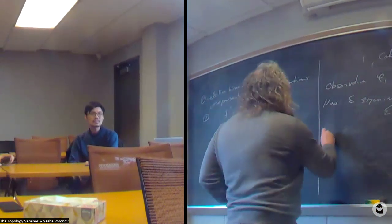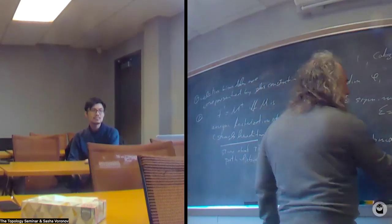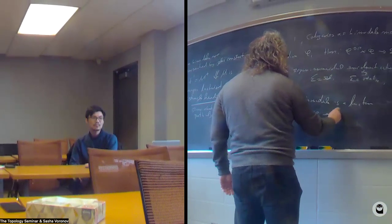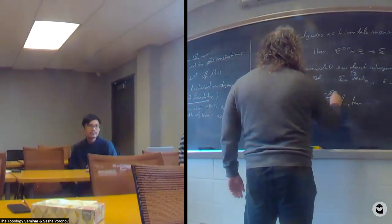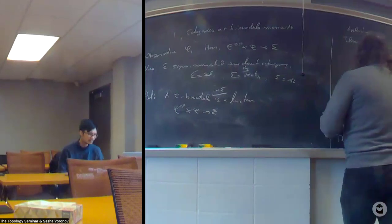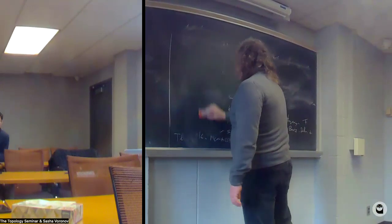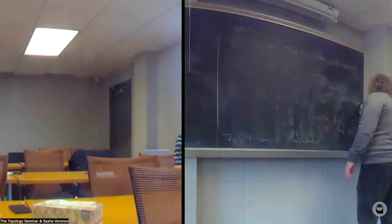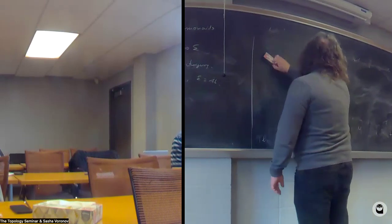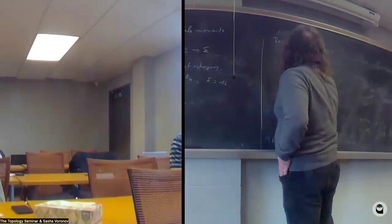Let's make a definition: a C bi-module is a functor from C-op cross C to E. Maybe I will do an example so we can see that we're actually doing representation theory. Why do I call that a bi-module? Let's say E is a group — you might as well take it finite or at least discrete.